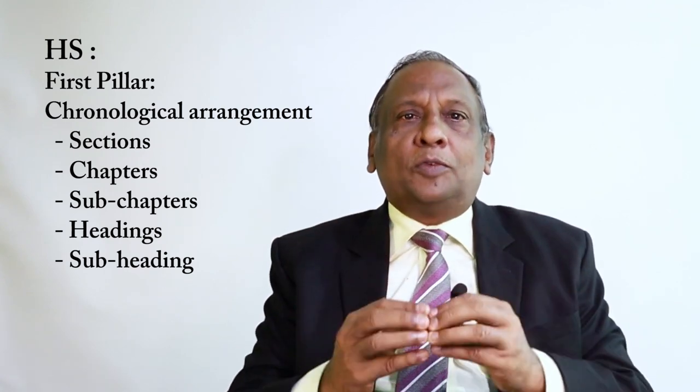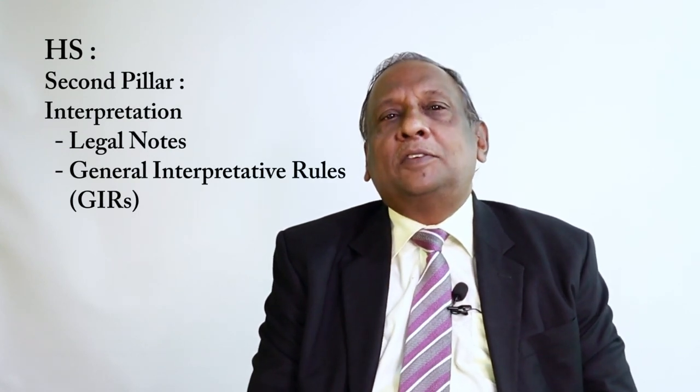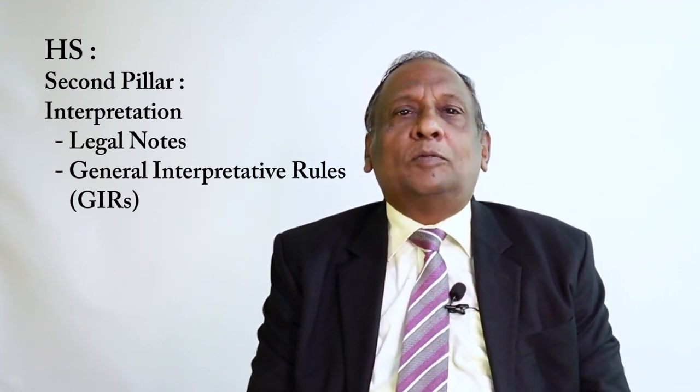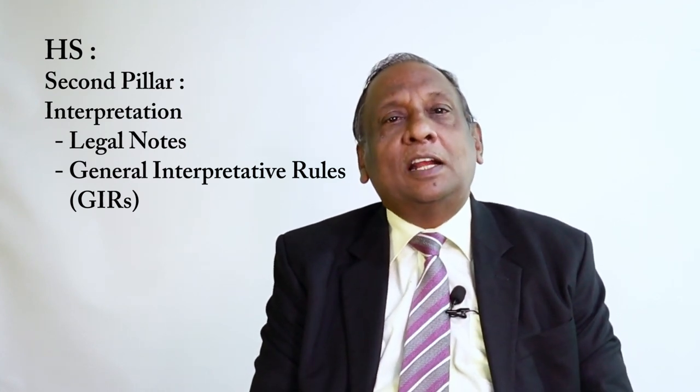These grouping systems work with two basic pillars. First, all goods are arranged in a tree diagram from trunks to leaves through various branches — big branches and small branches. Like that, HS also moves from sections, chapters, sub-chapters, headings, subheadings until you find a six-digit code at the tail end of the line. The second pillar is that classification under HS works with legal notes and six interpretative rules, called GIRs — General Interpretative Rules.